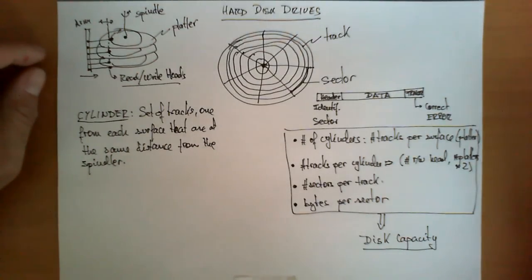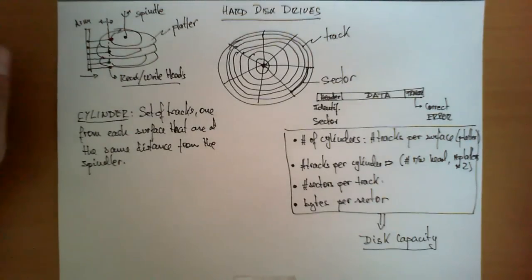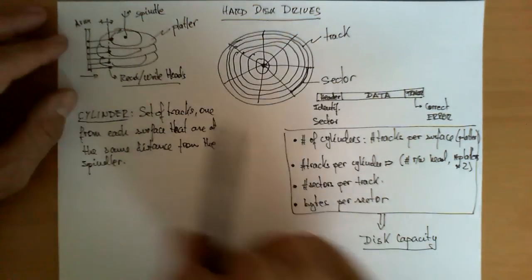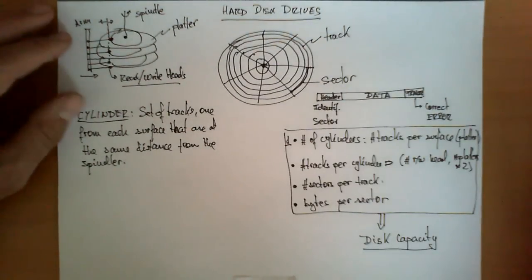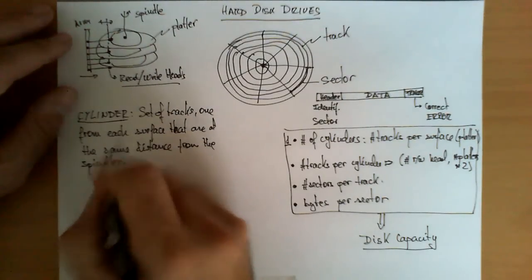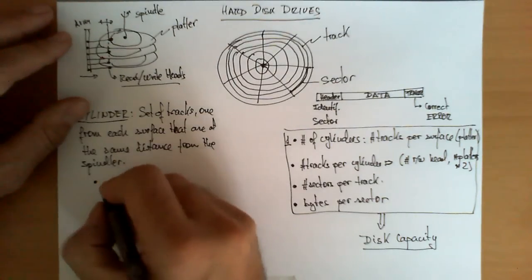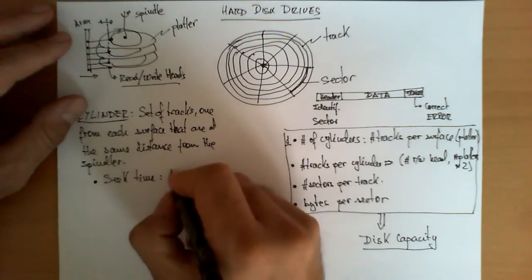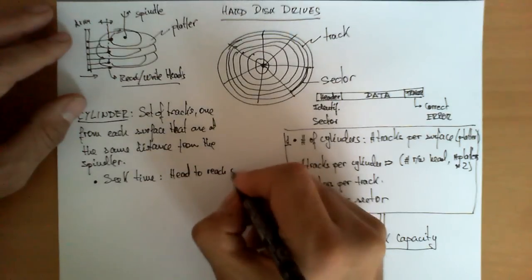Let's now analyze how much time is needed for one of these disk drives to locate and read or write one of the sectors. So the operation goes as follows. The first operation is to make sure that the read-write heads are positioned on top of the appropriate cylinder. So step number one is finding which is the appropriate cylinder. The time it takes this arm to move the heads either towards the axis or towards the edge of the platter to find the right cylinder is what is called seek time.